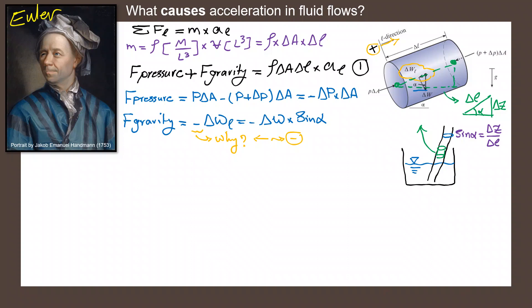So I can calculate that sine of α is ΔZ divided by ΔL. Opposite divided by ΔL. So if I put this inside the equation, this would be negative ΔW times ΔZ divided by ΔL. Perfect.